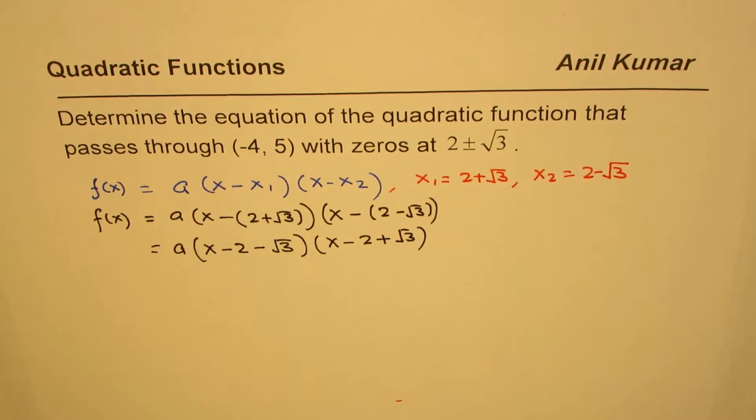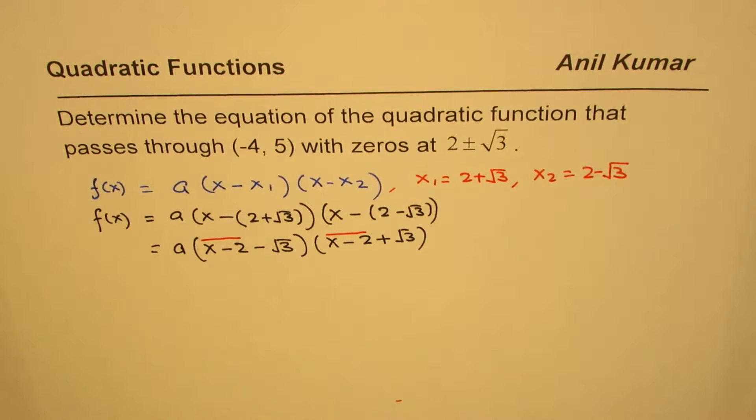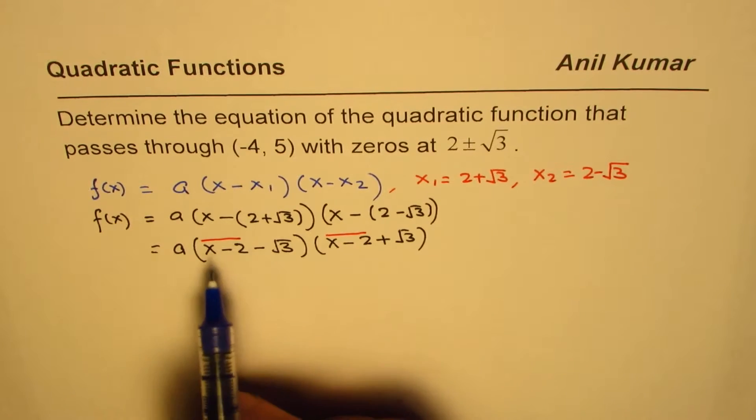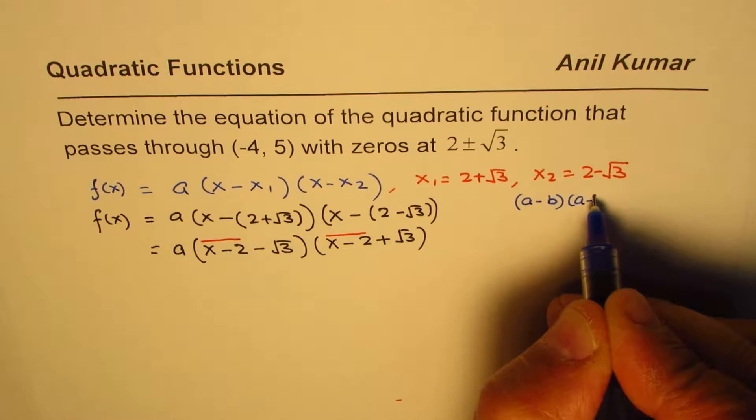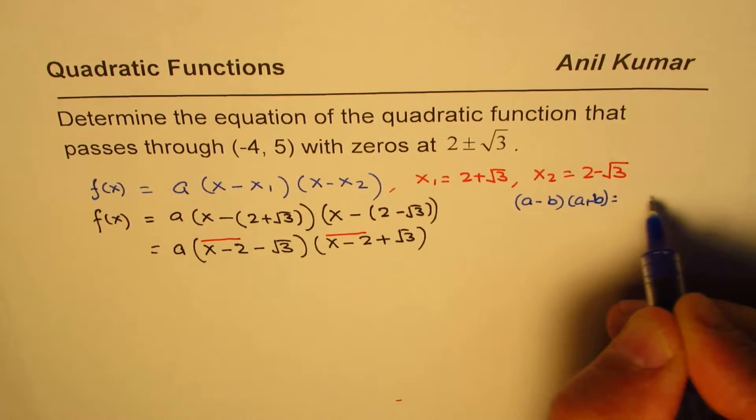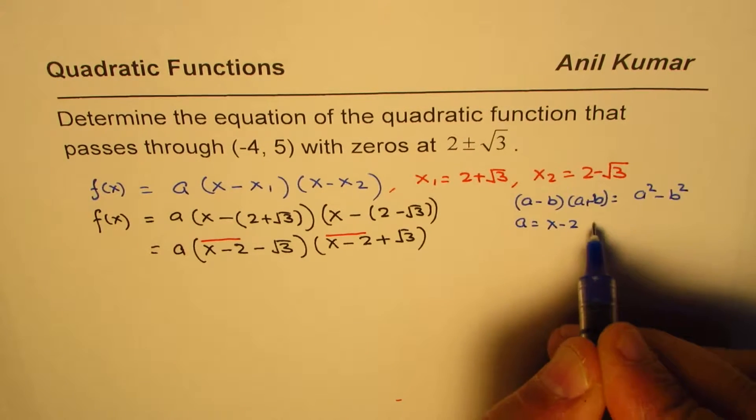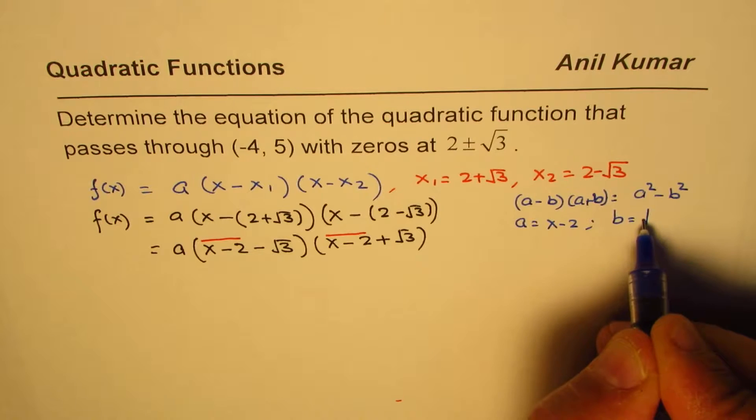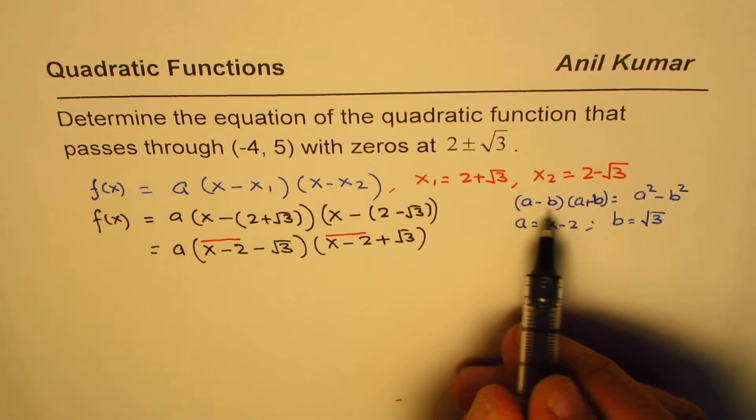Now think about these two as one term, then we can multiply them using (a - b)(a + b). I hope you remember (a - b)(a + b) can be written as a² - b². Think as if a = x - 2 and b = √3. So we'll apply this formula, expanding difference of squares which is product of sum and difference.